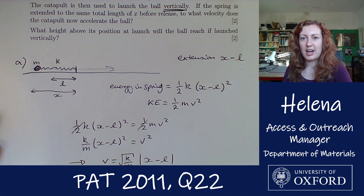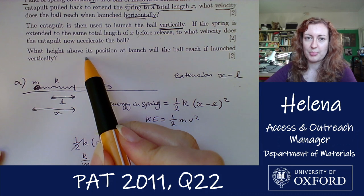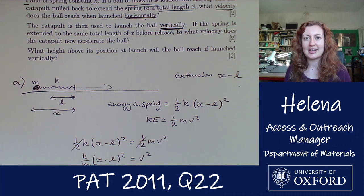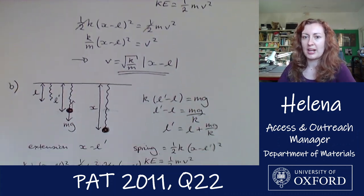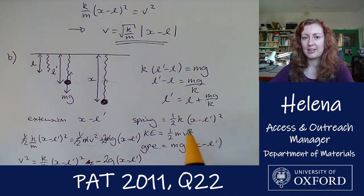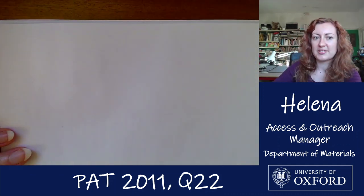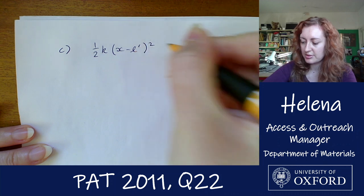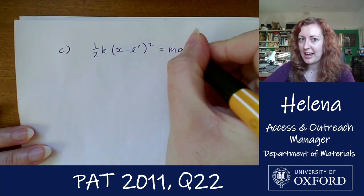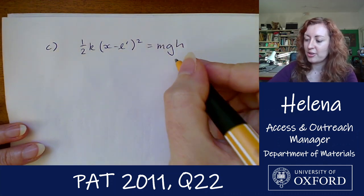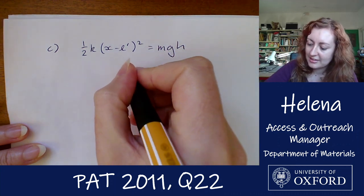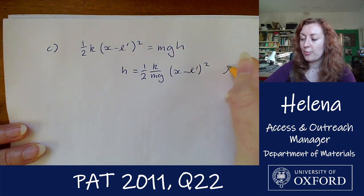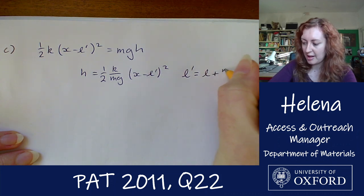For part C: what height above the launch position will the ball reach if launched vertically? At its maximum height, velocity is zero, so all the energy stored in the spring is turned into gravitational potential energy at height h. Equating: one half k(x minus l prime) squared equals mgh. Dividing through by mg gives h equals k over (2mg) times (x minus l prime) squared, where l prime equals l plus mg over k, as defined previously.